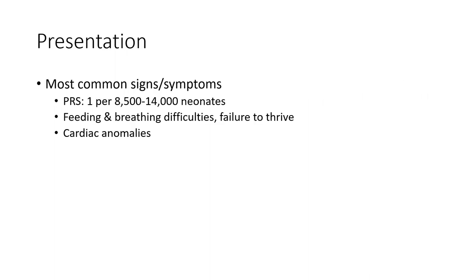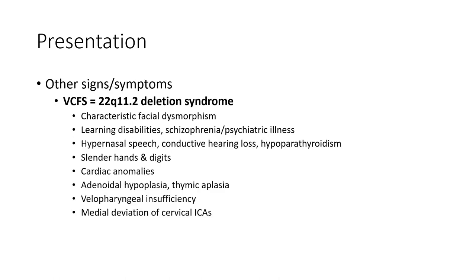Most common signs and symptoms. Pierre Robin Sequence occurs in 1 per 8,500 to 14,000 live births. Symptoms include feeding and breathing difficulty, failure to thrive, and cardiac anomaly.